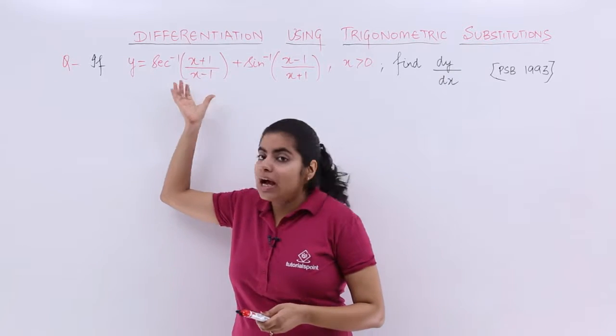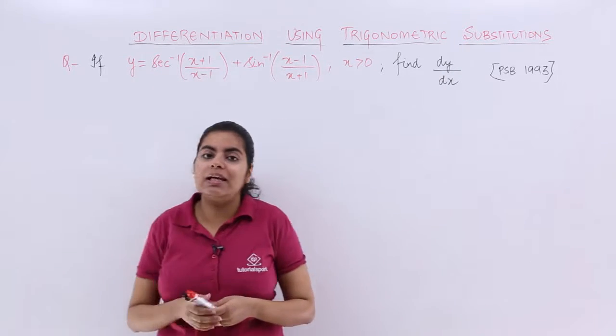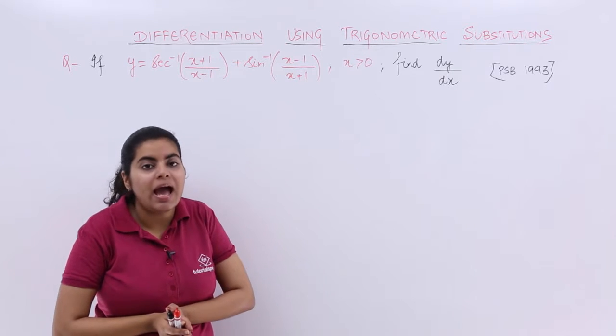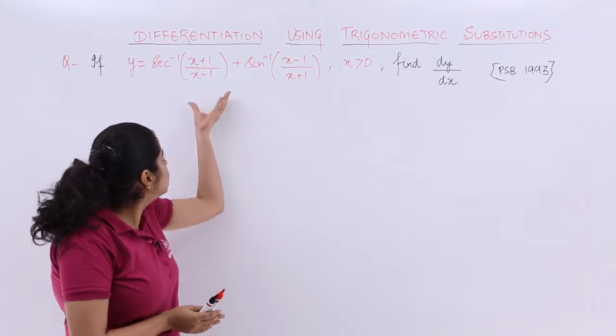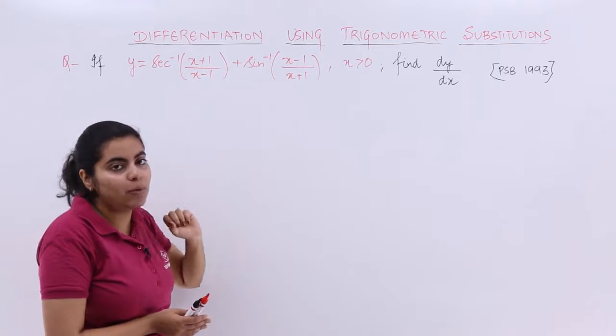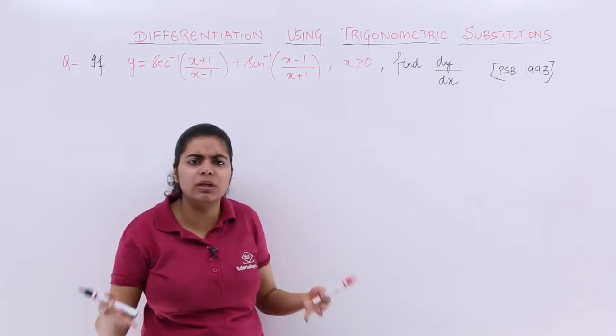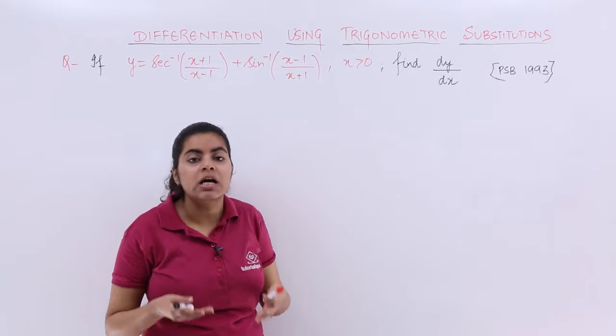The question is again, I illustrate that it has secant inverse and sin inverse and they are in addition. And you also see that here in the bracket is (x+1)/(x-1), here it is (x-1)/(x+1). That means only the reciprocal difference is there.